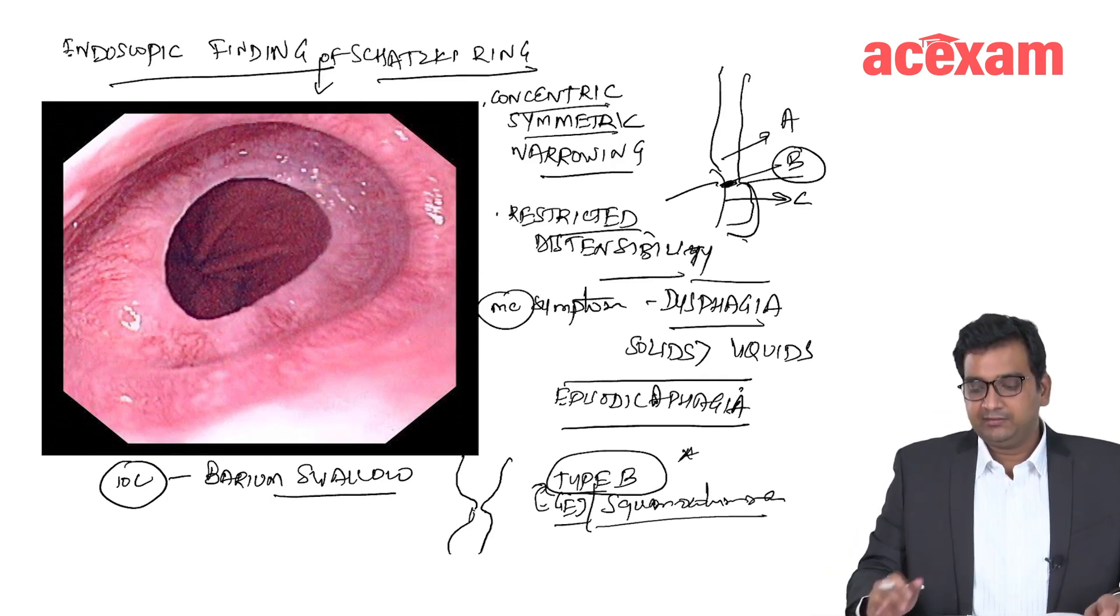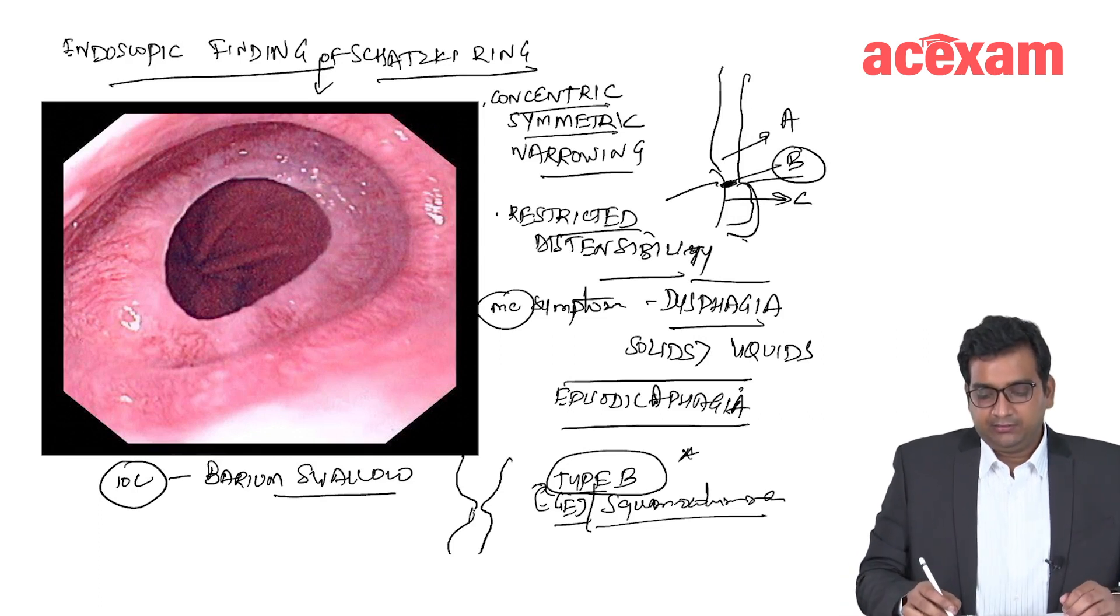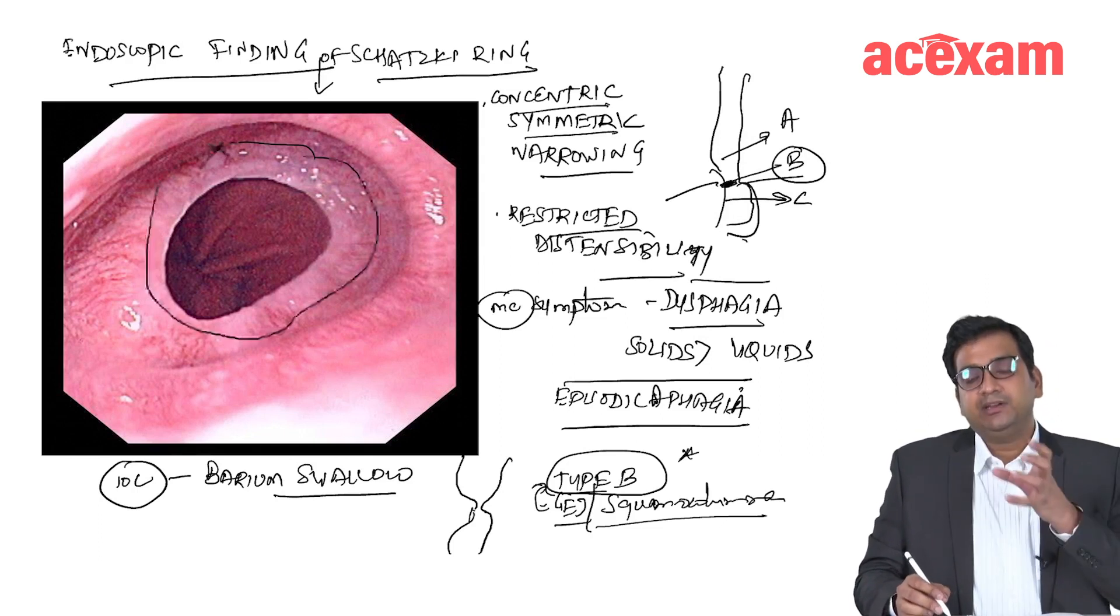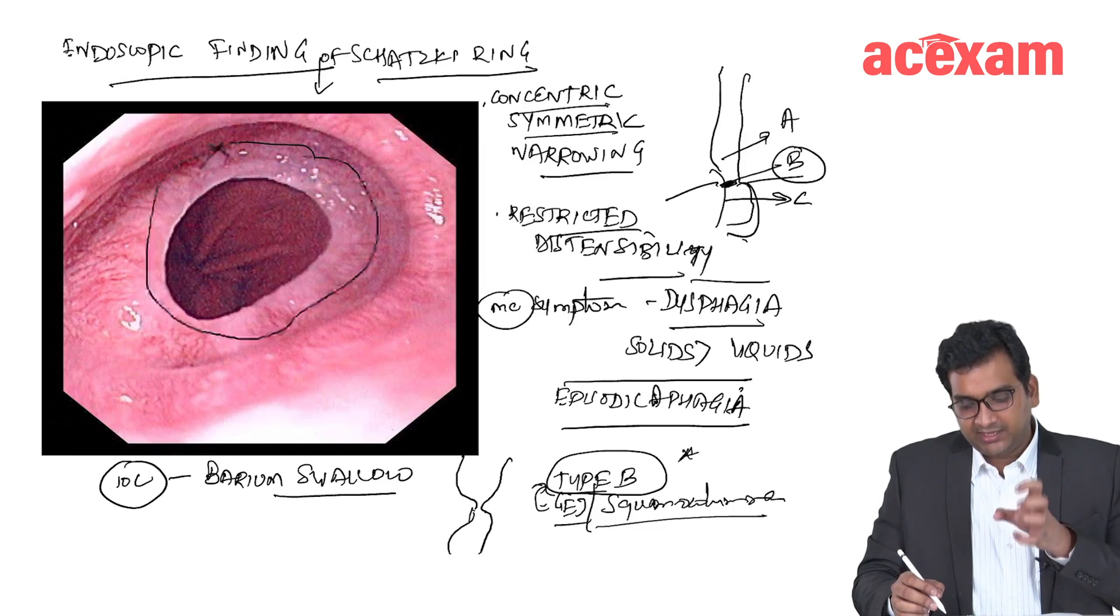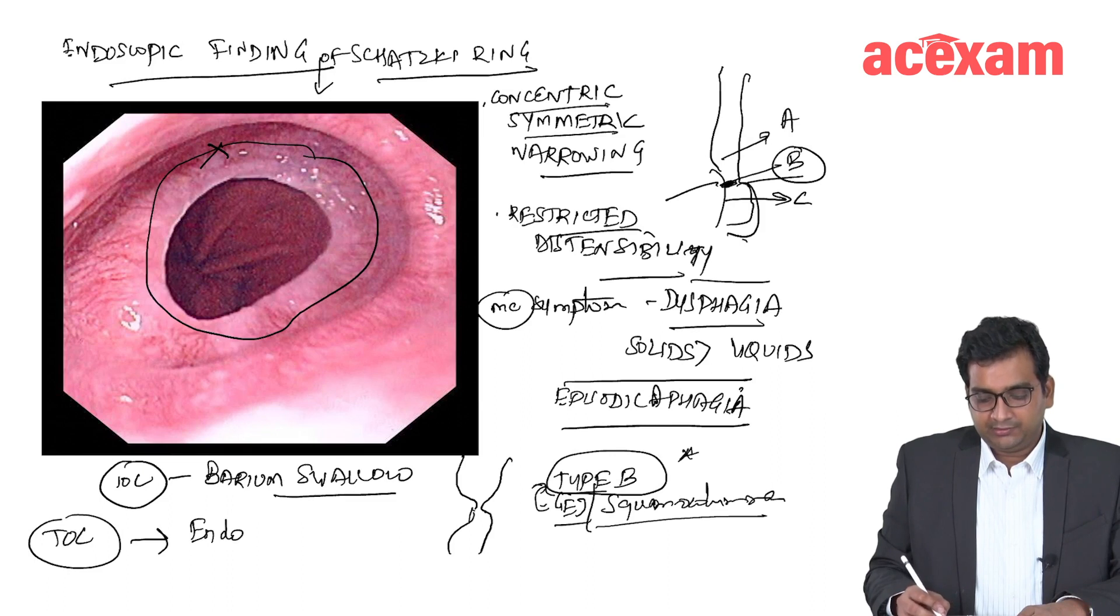And the treatment is endoscopic dilatation. We will not excise this Schatzky ring because after excision this Schatzky ring, there will be cicatrization or scarring with fibrosis which will lead to development of a stricture. So the treatment of choice in this case is not surgery, it is endoscopic dilatation.